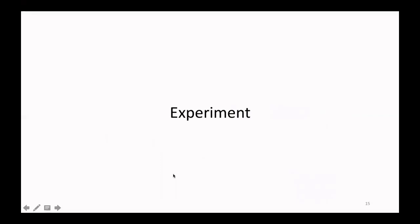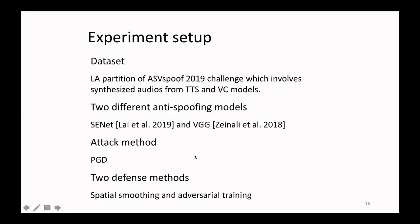Let's get into the experiment part. For the dataset, we use the LA partition in ASV Spoof 2019. The dataset contains fake audios generated by TTS and VC models. The LA partition is divided into evaluation, development, and training sets, and we directly follow this partition. Two different anti-spoofing models are used: SENET and VGG. We simply borrowed the model structures from previous papers, so if you are interested in more details, you can read their papers. The attack method we use is PGD, and two defense methods including spatial smoothing and adversarial training are used.